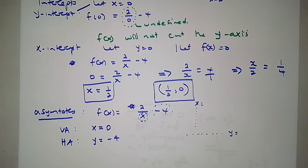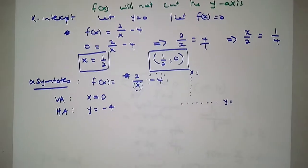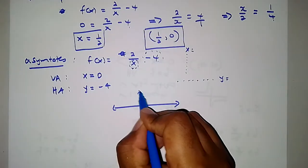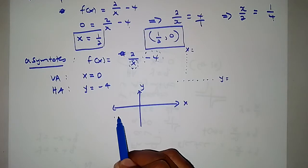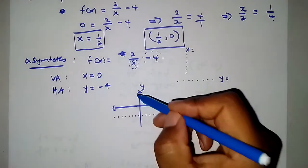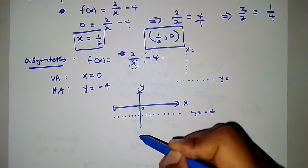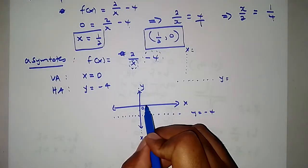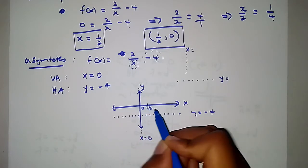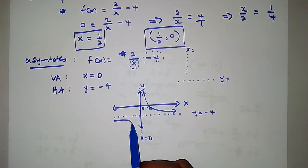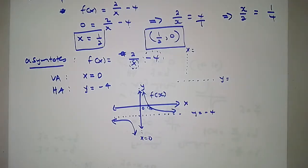At this point we are ready to sketch the function. We draw the y-axis and x-axis, then mark the horizontal asymptote at y equals negative 4 and the vertical asymptote at x equals 0. The function cuts the x-axis at one half. So we can now draw the two branches of the hyperbola in the first and third quadrants relative to the asymptotes.